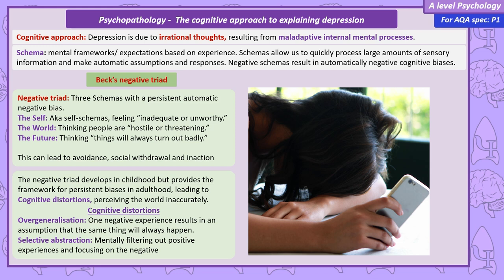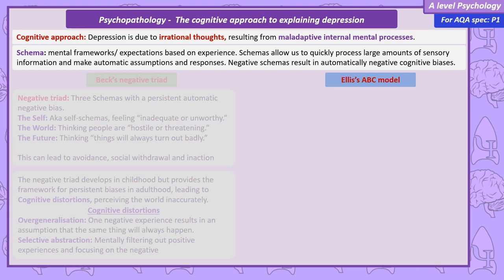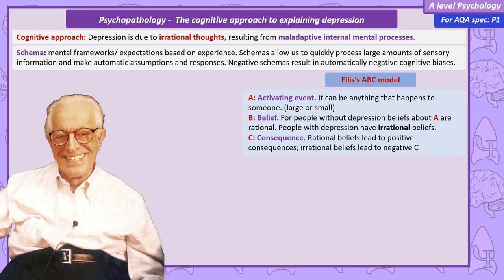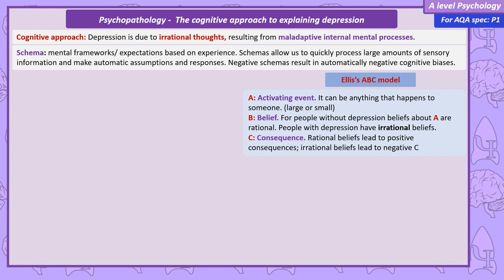Albert Ellis used something he called the ABC model to explain how someone with depression responds to stress, adversity, and unpleasant events in a way that leads to unhealthy emotions. The A in the ABC model refers to the activating event — this happens to people with and without depression, so it could be something major like the end of a relationship, or as small as missing a bus. The difference between someone with and without depression is B — their belief — which could be rational or irrational. A rational belief at the end of a relationship might be: we weren't right for each other, we wanted different things, I should move on.